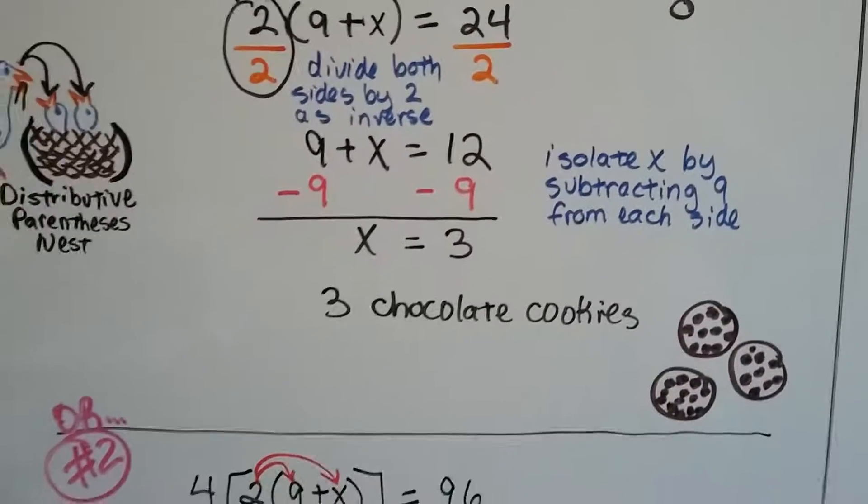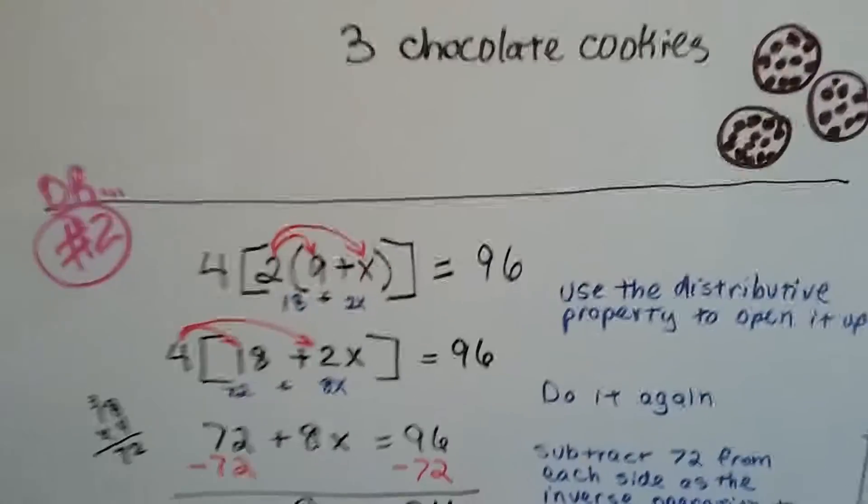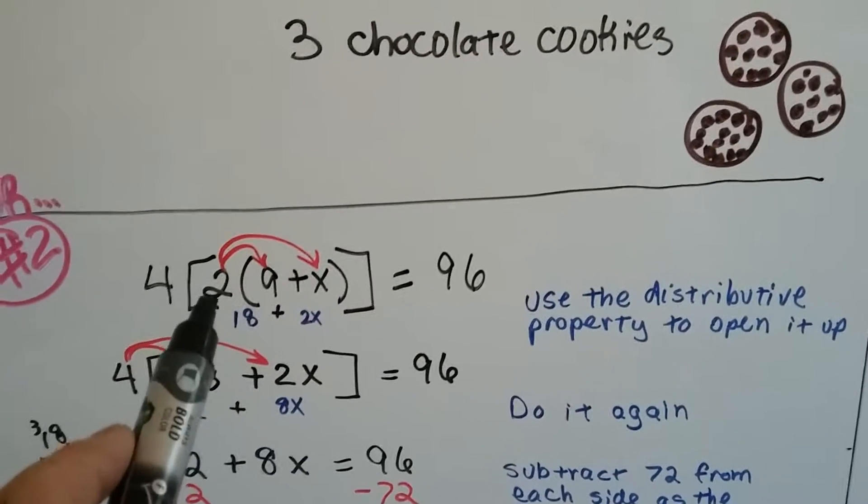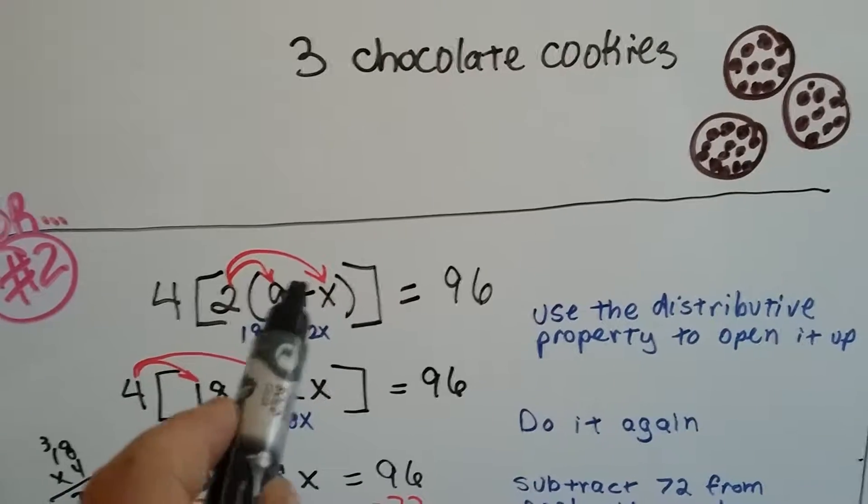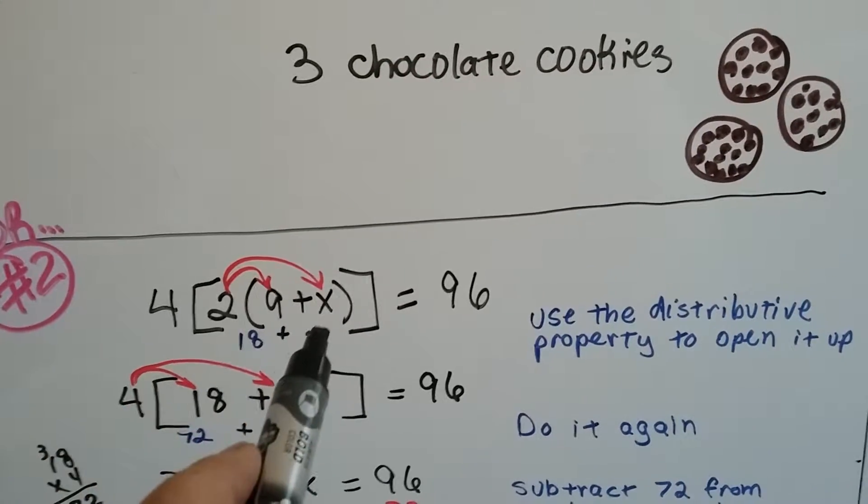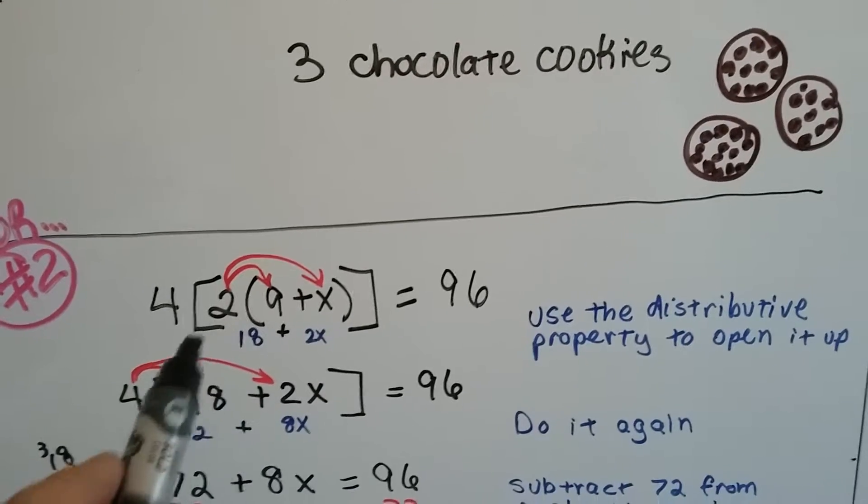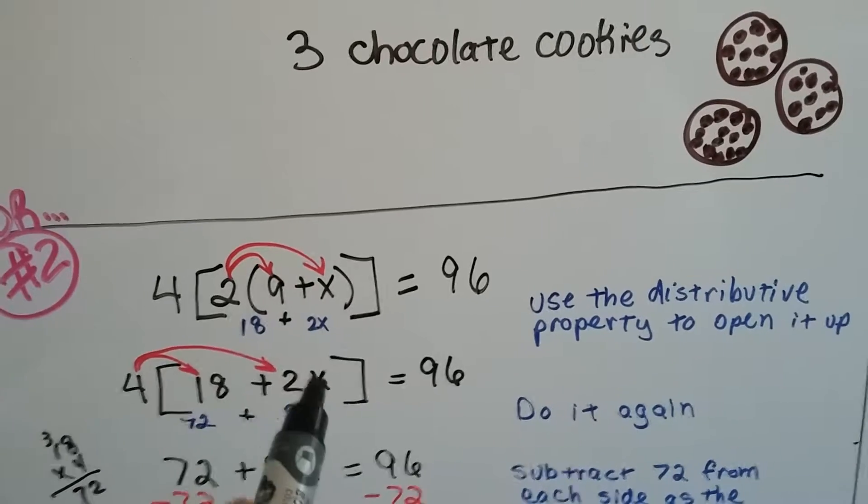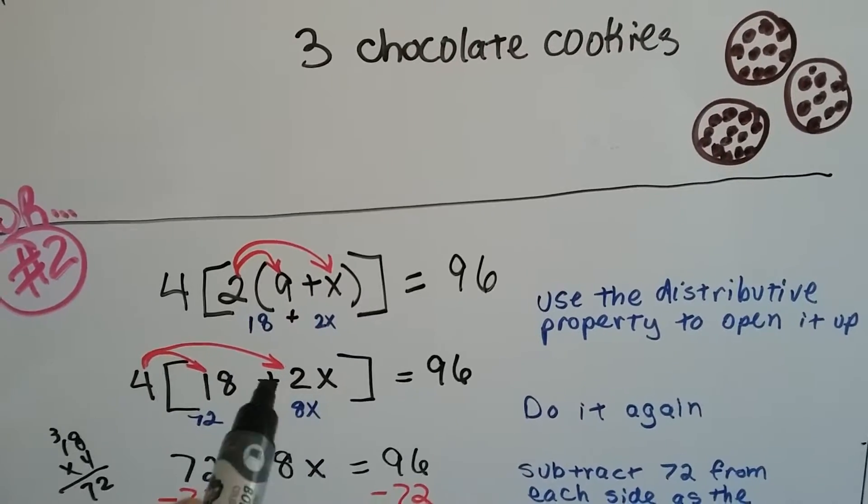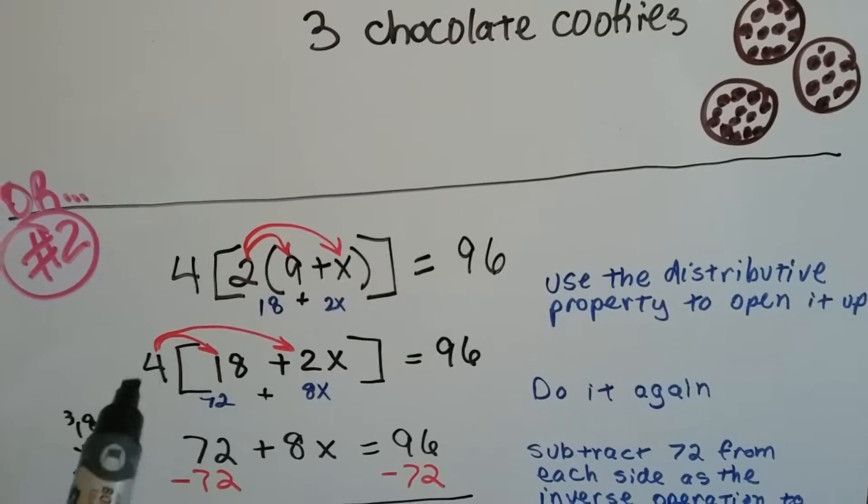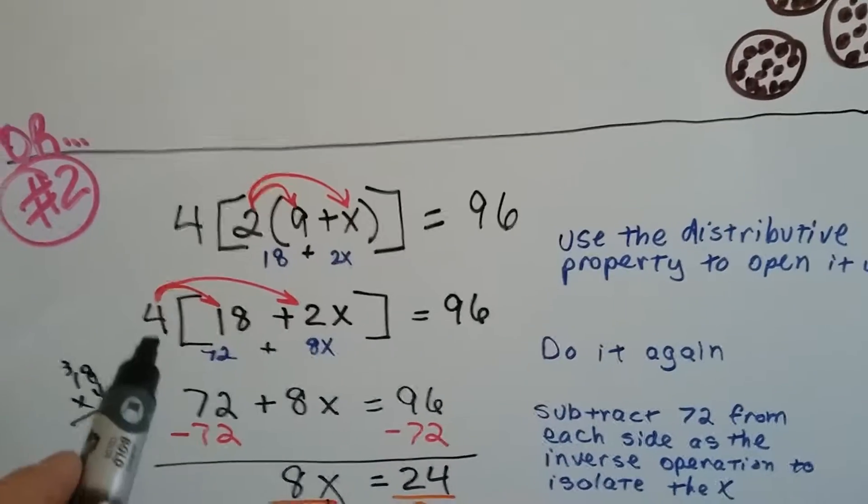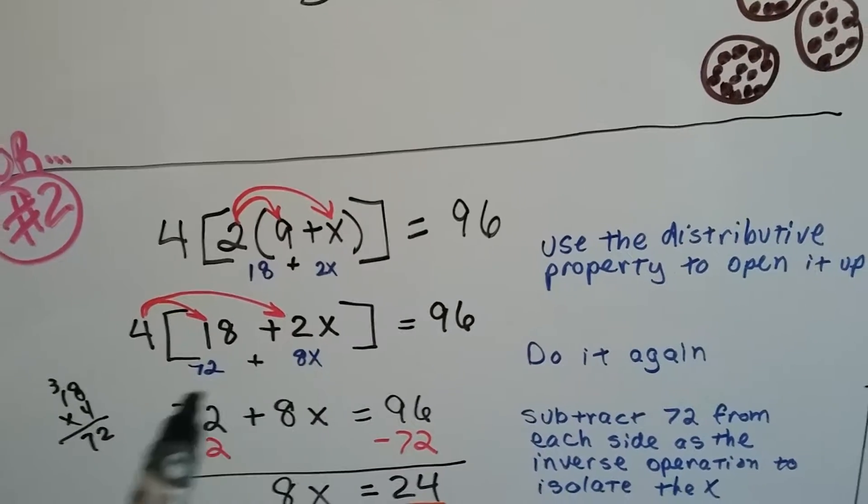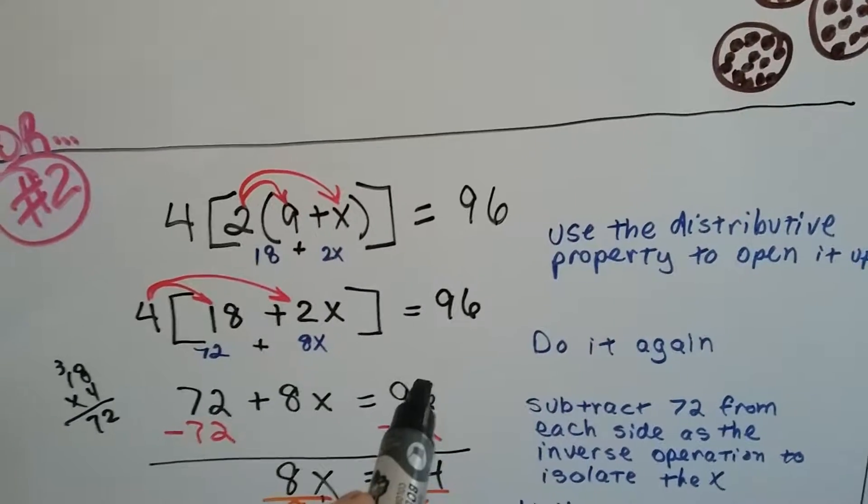Now, here's the other way. It's the opening it up way. This is the other option that you could have done. We could do 2 times 9 is 18 plus 2 times X is 2X. So now we have 4 on the outside of the bracket times 18 plus 2X equals 96. Now we distribute, like the mother bird to each baby. 4 times 18 is 72 plus 4 times 2 is 8. So now we've got 72 plus 8X equals 96.